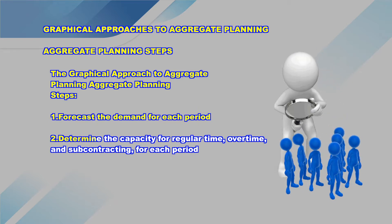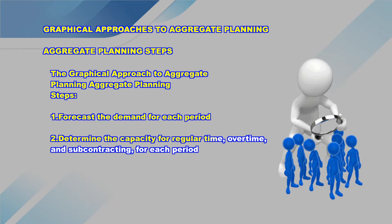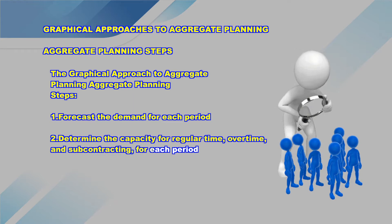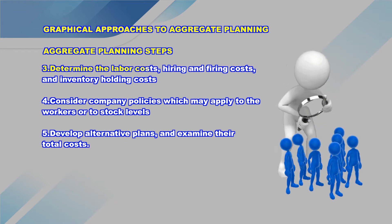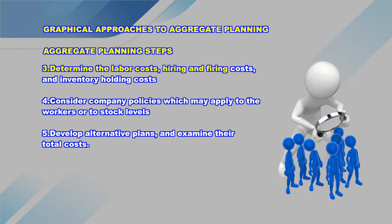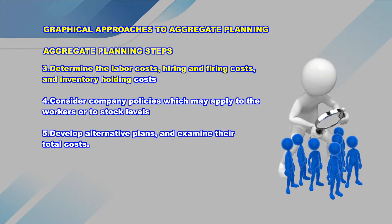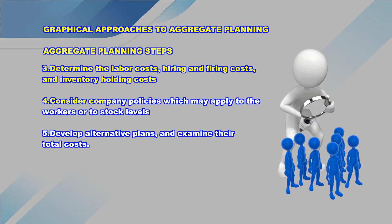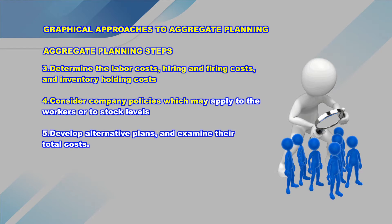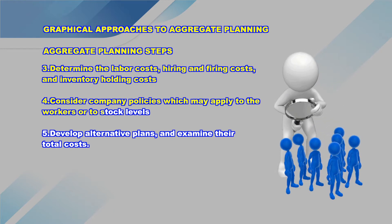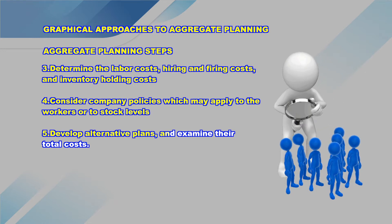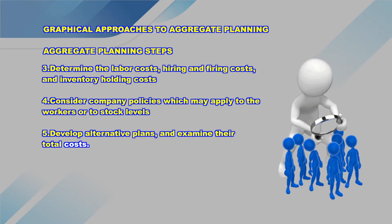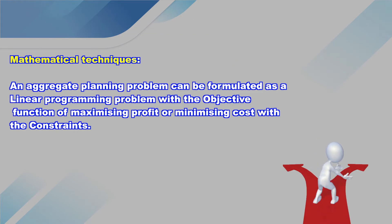The first step is to forecast demand for each period. The second step is to determine the capacity for regular time production, overtime production, and subcontracting. The third step is to determine the labor cost, hiring and firing cost, and inventory holding costs. The next step is to consider company policy which may apply to workers or inventories. Based on all available information, an aggregate production plan is prepared and compared with the total cost of various alternatives, and the best plan is selected.